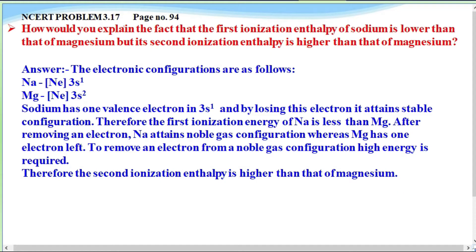Here we have NCERT problem 3.17 from page number 94. How would you explain the fact that the first ionization enthalpy of sodium is lower than that of magnesium, but its second ionization enthalpy is higher than that of magnesium? So let's see this answer.